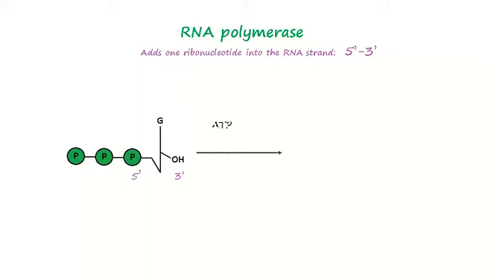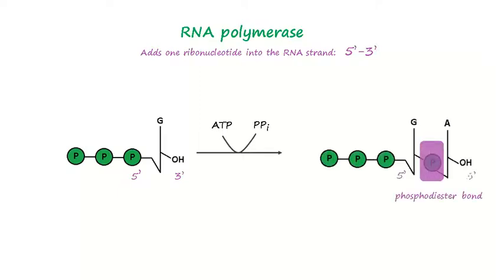An ATP enters the reaction, under polymerase effect, and creates a phosphodiester bond between guanine and adenine. Now the RNA strand has one ribonucleotide more.